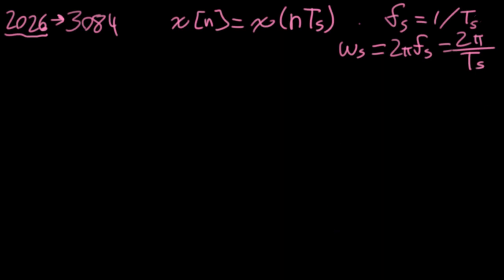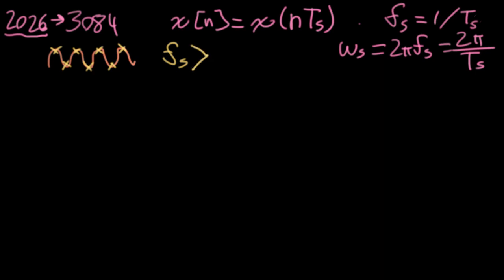In 2026, we looked at just sampling sinusoids, and we discovered that if you wanted to reconstruct the sinusoid from its samples, you needed something very particular: you needed the sample rate to be strictly bigger than twice whatever the actual frequency of the sinusoid is.